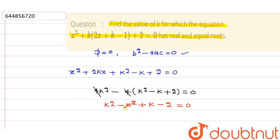The k² terms cancel out, giving us k - 2 = 0, so k = 2. Therefore, k equals 2 for this quadratic equation to have real and equal roots. Thank you.